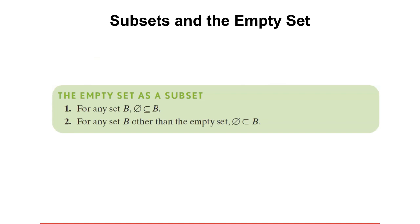Here is an important fact to remember: for any set B, the empty set is a subset of B. Every set is a subset of itself, so the empty set is a subset of itself. For any B other than the empty set, the empty set is a proper subset of B, because if B is non-empty, the empty set and B are not equal.